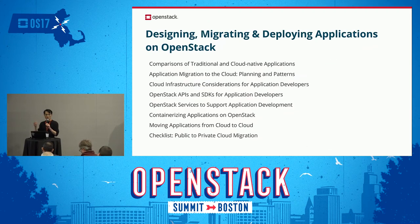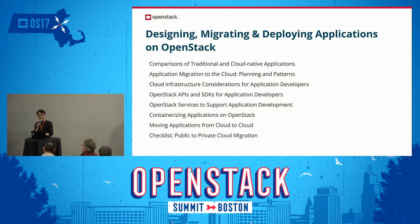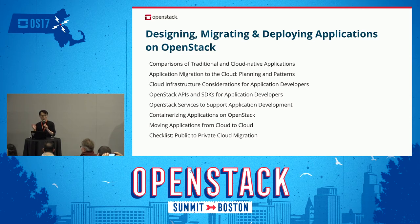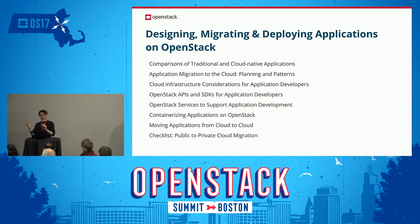In this third book, we're focusing on the application perspective. Assuming you already have your OpenStack environment and you plan to design, migrate, or deploy applications on OpenStack Cloud, this book covers what you need to be aware of. We compare traditional versus cloud-native applications and the differences between them. For migrating applications to cloud, we discuss planning strategy and migration patterns — whether you want a cloud-hosted approach, cloud-optimized, or cloud-native.